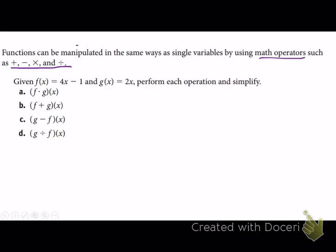So we're going to look at two functions. Our first function is going to be our f of x. Our f of x is equal to 4x minus 1, and our g of x, which is going to be 2x. And so, as you see here, we're going to perform operations on these two functions.